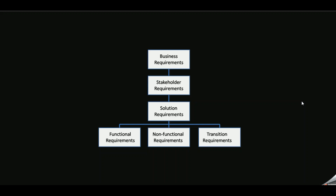There are four main different types of requirements: business requirements, stakeholder requirements, solution requirements, and transition requirements. However, in this diagram there are two more — functional requirements and non-functional requirements — which are actually subcategories under solution requirements.